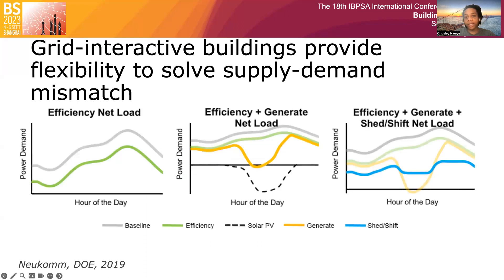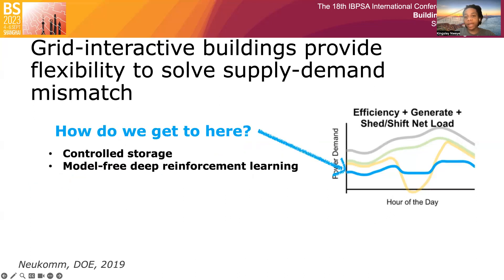Therefore, we need a smart approach to manage and control building loads to ensure that electrification and renewable penetration do not bring about grid insecurity. The Department of Energy introduced the Grid Interactive Efficient Building initiative to promote the integration of distributed energy resources in buildings that can provide the grid with flexibility. Improving energy efficiency provides reduced load; PV adoption provides self-generation capabilities. To solve the duck curve problem, load shedding and shifting are needed through smart control of storage systems. Our work proposes controlled electricity and thermal storage using model-free deep reinforcement learning as a pathway towards achieving load shedding and shifting.